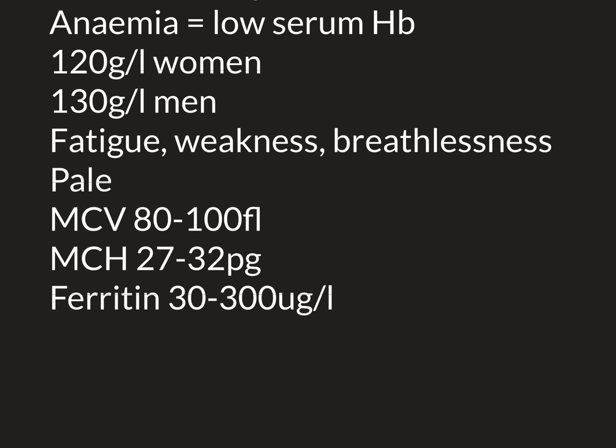We diagnose anaemia by doing a blood test and measuring the haemoglobin concentration: below 120 g/L is anaemic in women, below 130 g/L is anaemic in men. If anyone presents with tiredness, weakness, breathlessness, or looks pale, one of the tests we'll always do is measure their haemoglobin concentration. If we find the person is anaemic, how do we know the anaemia is due to iron deficiency? There are many other problems that can cause anaemia, so we look at other findings for clues.